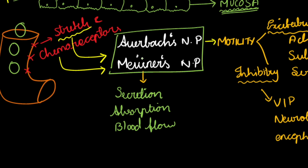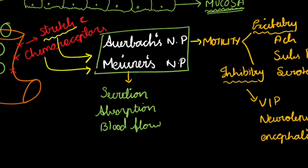Auerbach's and Meissner's plexuses are stimulated when food enters the GIT, activating stretch reflexes and chemoreceptors in the GIT walls. Auerbach's plexus is mainly concerned with GIT motility and has both excitatory neurotransmitters — acetylcholine, substance P, and serotonin — and inhibitory neurotransmitters — VIP, neurotensin, and enkephalin. Meissner's nerve plexus is more concerned with secretion, absorption, and blood flow to the GI tract.